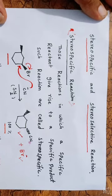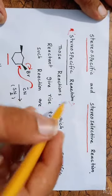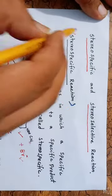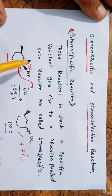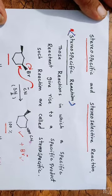What are stereospecific reactions? Stereospecific reactions are those reactions in which a specific reactant will give rise to a specific product. What does it mean? It means that if we have a cis-reactant, it will always give rise to only one product, and that product may be cis or it may be trans.